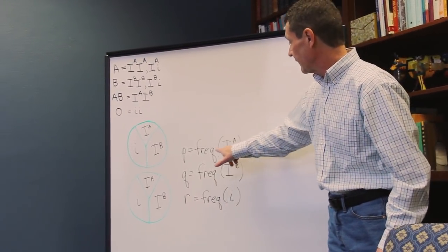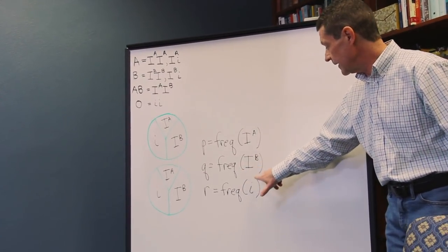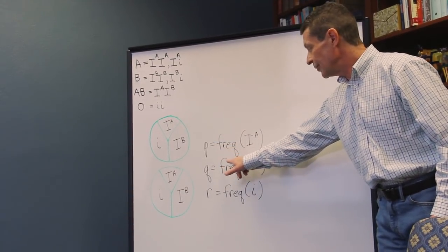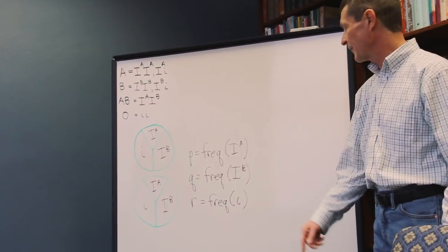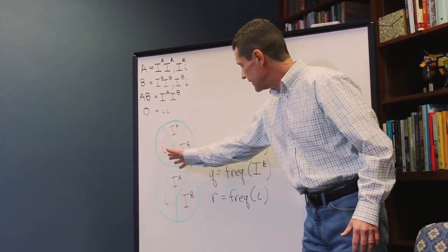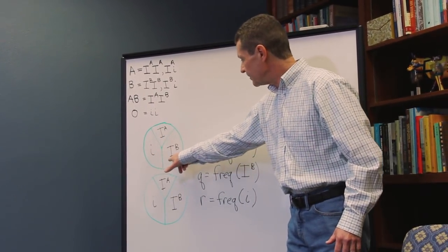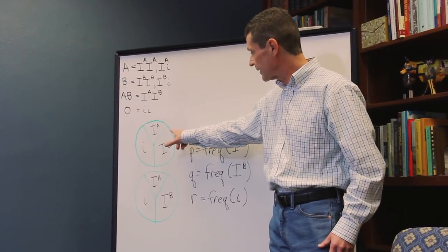So, you can have the frequency of the IA allele, the frequency of the IB, and the frequency of the small i. These are P, Q, and R. That's where the third one comes in. So, there are three separate frequencies. And if we think of these circles as a population, the size of the piece of the pie represents how much of each of the three alleles.